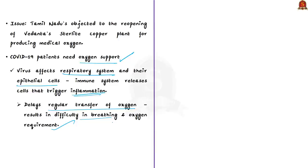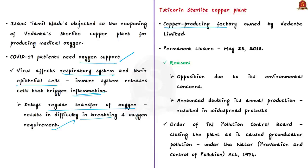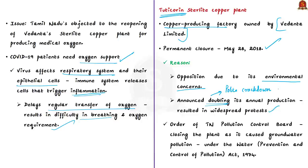The Sterlite Copper plant in Tamil Nadu was one of India's largest copper-producing factories. It is owned by England-based company Vedanta Limited and situated in Thoothukudi district. The project had faced opposition for nearly two decades due to environmental concerns, but opposition intensified when the company announced expansion of the plant to double its annual production from 0.4 million tons to 0.8 million tons. This caused widespread protests resulting in a police crackdown where 13 people were killed in police firing.